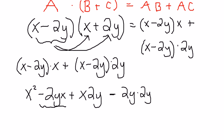-2yx and +x(2y) actually cancel each other out because order of multiplication doesn't matter. Both of these are equal to, well the first one is equal to -2xy and the second one is equal to +2xy. Now, the total result is x² - 4y².